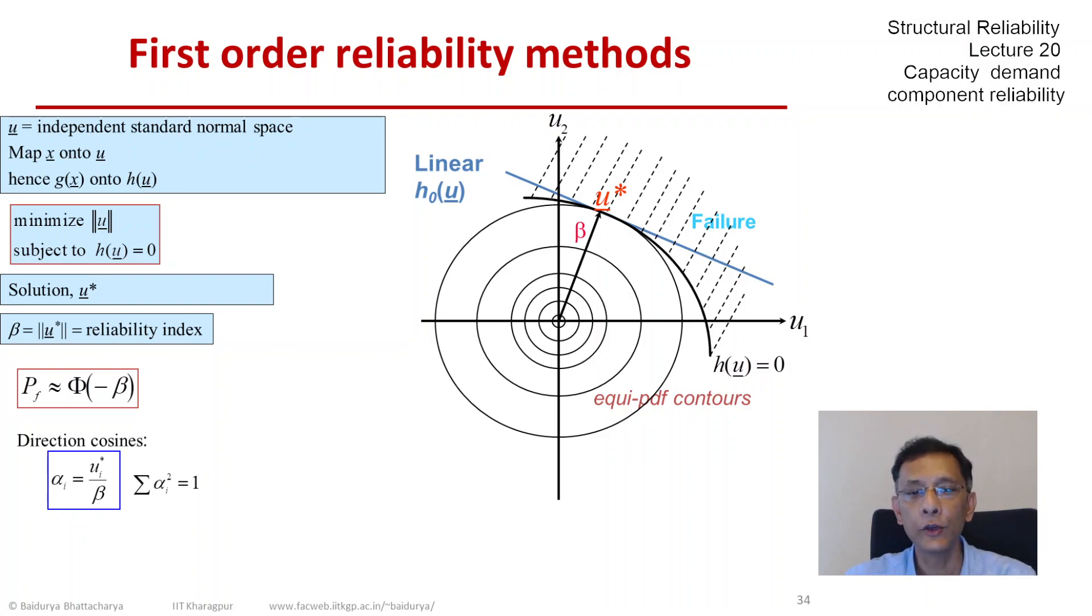Now it may have struck you that this problem setup does not differentiate whether the failure region is on the far side of h equals 0 or the near side. In other words, is the origin contained in the failure region or not? The origin being part of the failure region signifies very low reliability, something less than even half, which is not something we typically encounter in structural reliability.